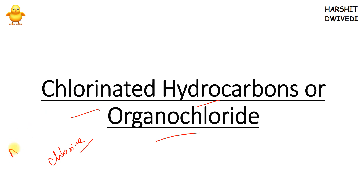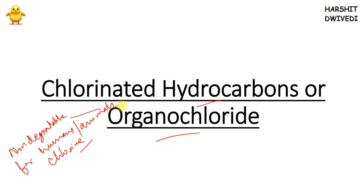These chlorinated hydrocarbons become non-degradable — non-degradable for humans and animals, whose metabolic systems cannot break them down. Because the metabolic functions of humans and animals are unable to degrade these chlorinated hydrocarbons and organochlorides, they are going to bioaccumulate.